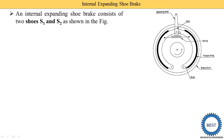Here you see this is the shoe — this is S1 and this is S2 — and this black color part is the friction material, also called the friction lining. This is the operating lever and here the cam is provided. These are the springs. When we operate the brake, the shoe expands and comes in contact with the brake drum. That's why the brake name is given 'internal expanding shoe brake.'